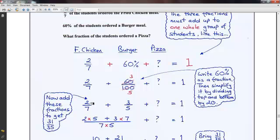We've got two-sevenths of the students chose fried chicken. Three-fifths of the students, the 60%, chose a burger. Another fraction, which we have to work out, chose a pizza. But these three fractions must add up to one whole, the whole group of students.